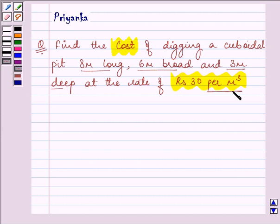With the help of the cost, the rate of the cost which is given to us, we can get an idea that we need to find out the volume of this cuboidal pit first because volume is the only measure that is found out in cube.